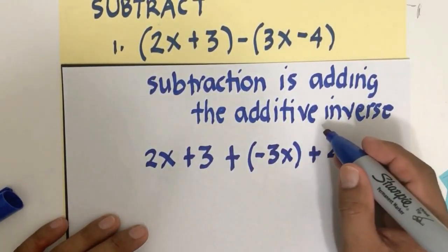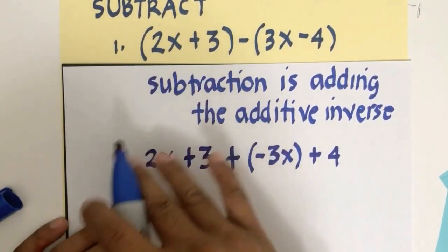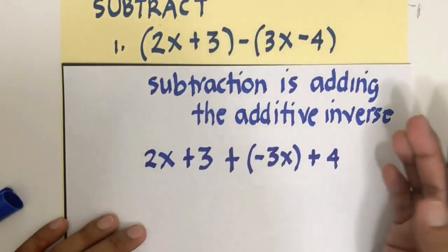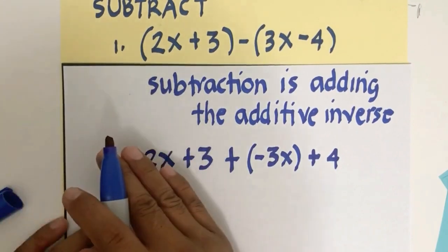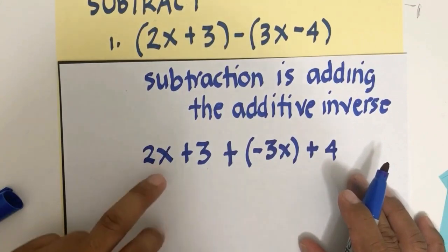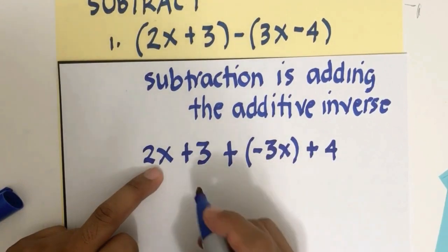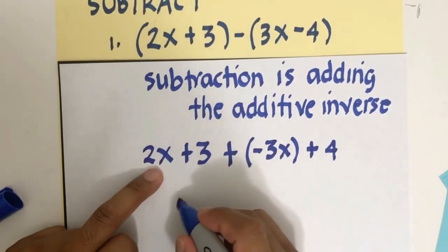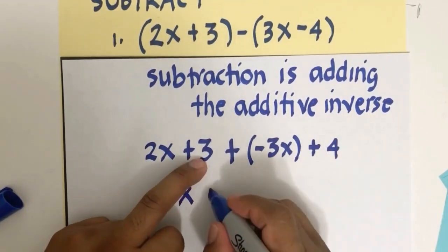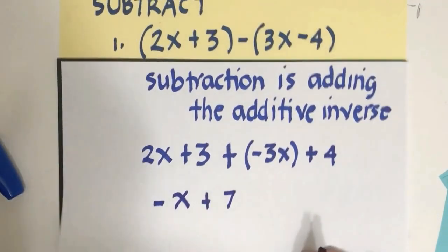The additive inverse is the opposite sign. The additive inverse of 5 is negative 5; of x is negative x; of negative x is positive x. After applying this: positive 3x becomes minus 3x, and minus 4 becomes plus 4. Then collect like terms: 2x and negative 3x gives negative x; 3 plus 4 equals 7. Answer: negative x plus 7.